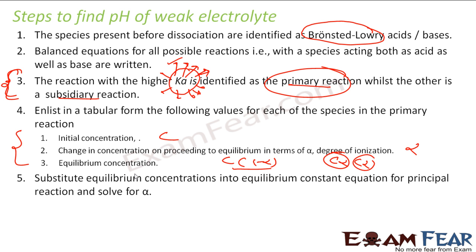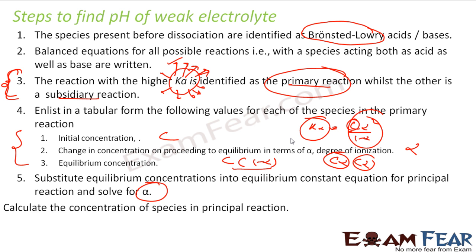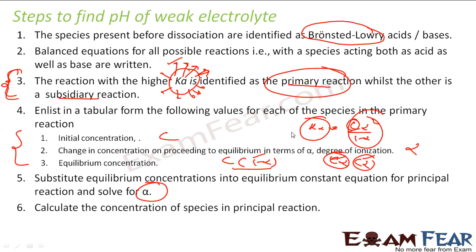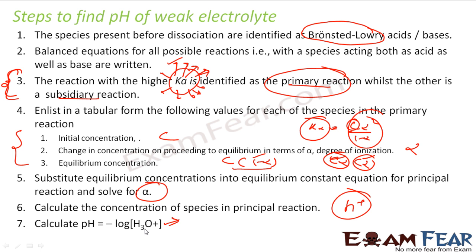Then we will substitute these values: we will set up the Ka expression and put all these values in and solve it. We will have the equilibrium concentration for all the species, including the equilibrium concentration of H⁺. Then just take the negative log of [H⁺] to get the pH.